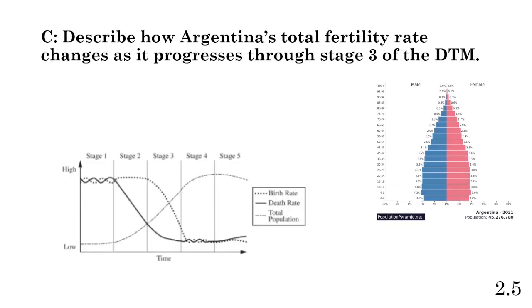Part C: describe how Argentina's total fertility rate changes as it progresses through Stage 3 of the DTM. We can look at the population pyramid and see that Argentina is not growing exponentially — it's growing at a pretty linear rate. If we look at Stage 3 on the model itself, population growth is increasing at a linear rate as opposed to Stage 2's exponential growth. The total fertility rate is declining, meaning population growth won't be as large as it was during Stage 2.